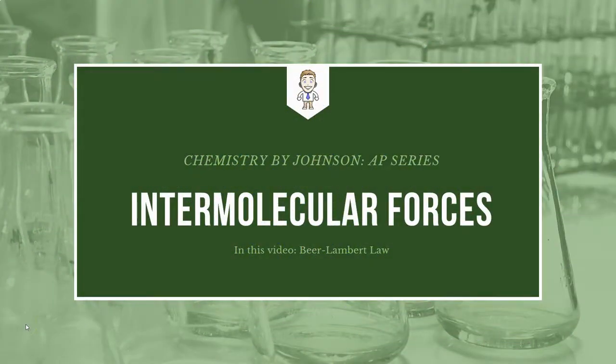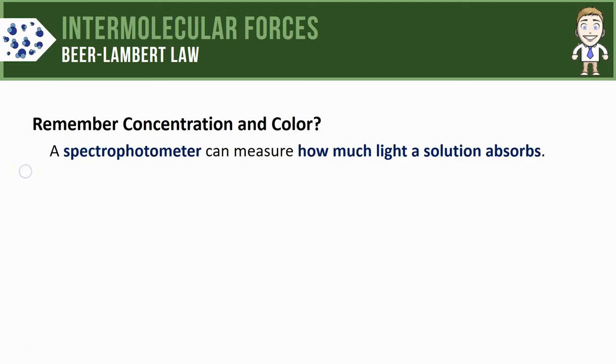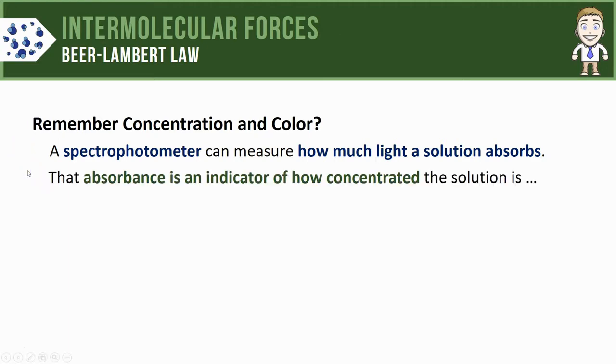Hey everyone, in this AP series video we'll take a look at a special equation known as the Beer-Lambert Law. First, let's remember some things about concentration and color. Specifically, a spectrophotometer is a device that can measure exactly how much light a solution absorbs. That absorbance is a great indicator